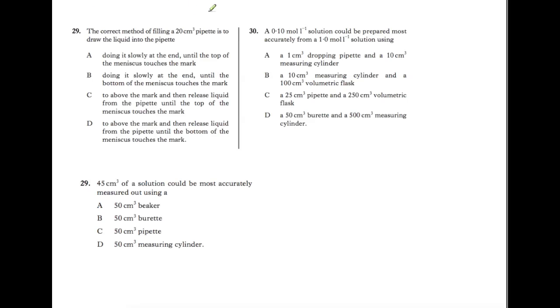So you can either do it slowly at the end until the top of the meniscus touches the mark. You wish to have the bottom of the meniscus touch the mark so it can't be A. Doing it slowly at the end until the bottom of the meniscus touches the mark. That could possibly be an answer.